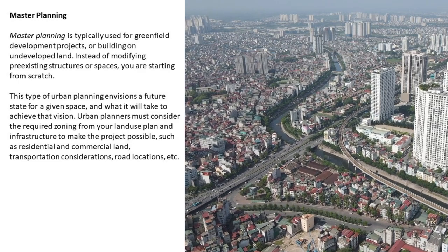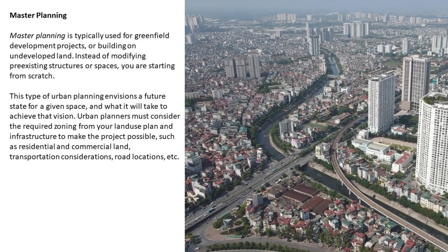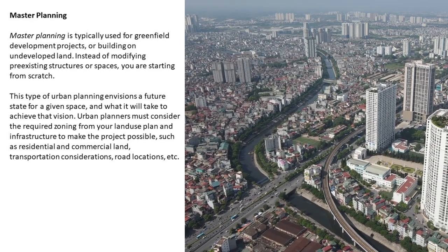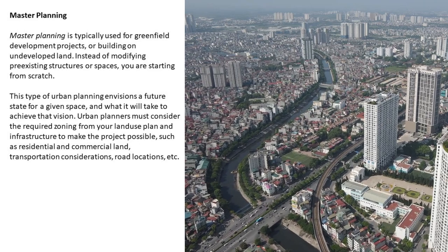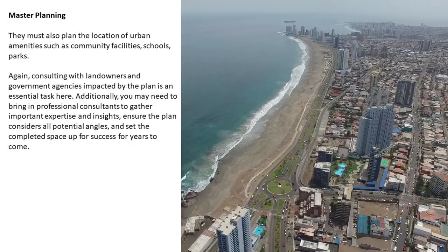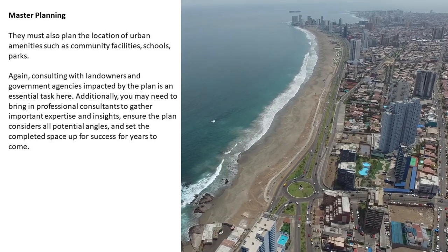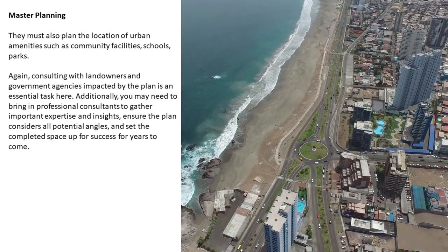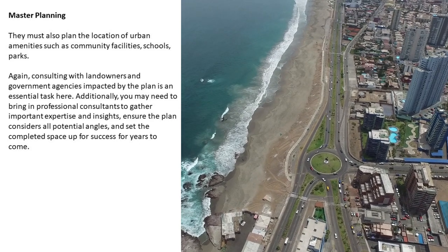Master planning is typically used for greenfield development projects, or building on undeveloped land. Instead of modifying pre-existing structures or spaces, you are starting from scratch. This type of urban planning envisions a future state for a given space, and what it will take to achieve that vision. Urban planners must consider the required zoning from your land use plan and infrastructure to make the project possible, such as residential and commercial land, transportation considerations, road locations, etc. They must also plan the location of urban amenities such as community facilities, schools, and parks. Consulting with landowners and government agencies impacted by the plan is essential, and you may need to bring in professional consultants to gather important expertise and insights, ensure the plan considers all potential angles, and set the completed space up for success for years to come.